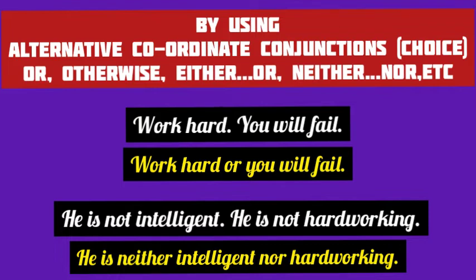'He is not intelligent' and 'He is not hardworking' are two negative simple sentences. So we use the alternative pair conjunction 'neither...nor' to combine them into a compound sentence: 'He is neither intelligent nor hardworking.'